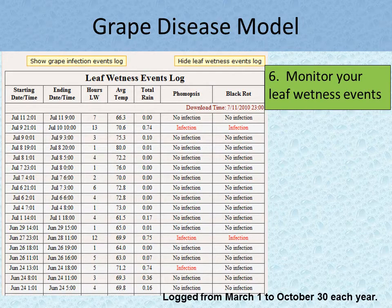You can also monitor your leaf wetness events, which are logged from March 1st through October 30th each year.